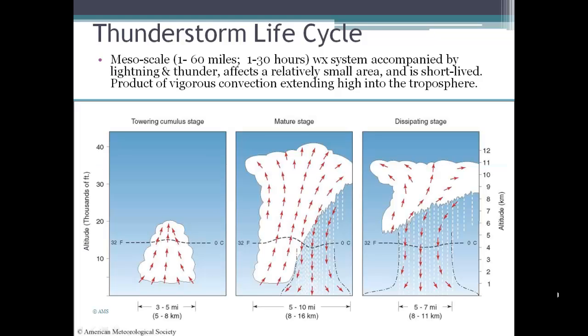A thunderstorm goes through a life cycle of three basic stages, beginning with the towering cumulus stage, where cumulus clouds are encouraged by convection to continue growing. If the towering cumulus continues to grow, it produces a thunderstorm cloud. At its mature stage, that thunderstorm cloud is denoted by updrafts and downdrafts, precipitation, lightning, thunder, and possibly tornadoes. Finally, the dissipating stage is where the downdrafts have overtaken the updrafts, and the warm, moist air has been cut away from the storm, and the cloud is dissipating.